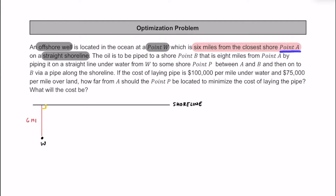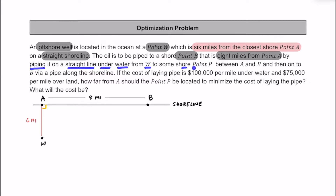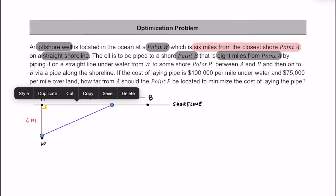Point W is 6 miles from point A, so point A is located on the shoreline right there. The oil will be piped to shore point B, which is 8 miles away from point A. A pipeline will run underwater in a straight line from point W to some shore point P, which must be between points A and B along the shoreline.